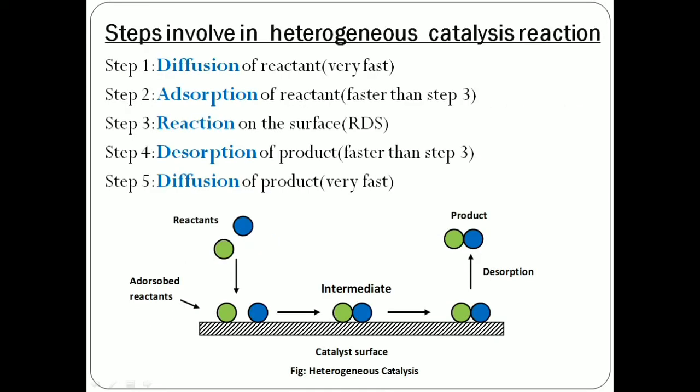Steps involved in Heterogeneous Catalysis Reaction. According to the Langwood Insolute mechanism, gas reactions taking place on the surface of the solid involve the following elementary steps. In step 1, diffusion of reactant to the surface through the pores or cracks available on the surface. Step 2 is adsorption of reactant at the surface, thus forming a bond. In step 3, chemical reaction on the surface — reactants are bound together on the surface of the solid, and a chemical reaction takes place to form an intermediate.